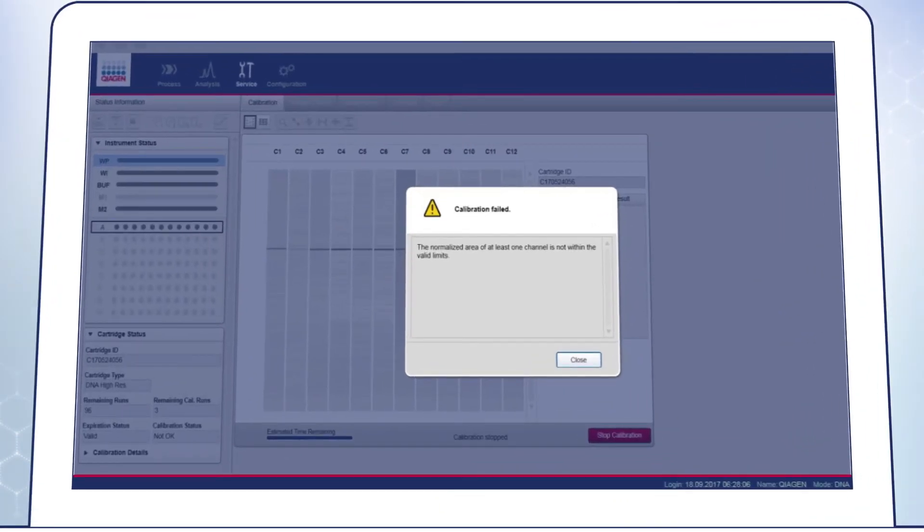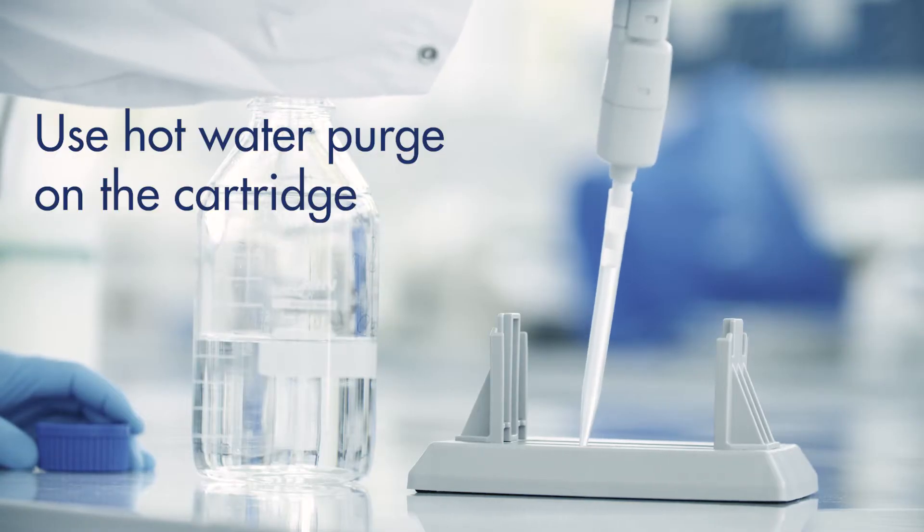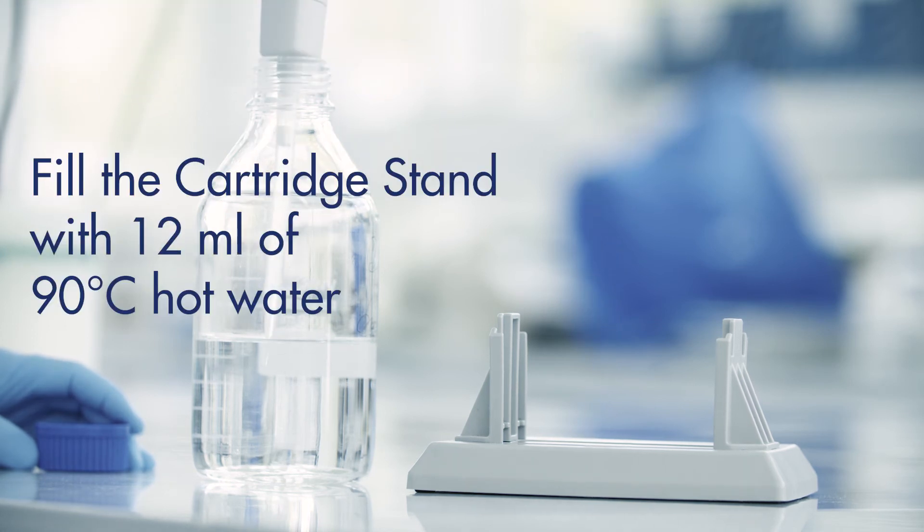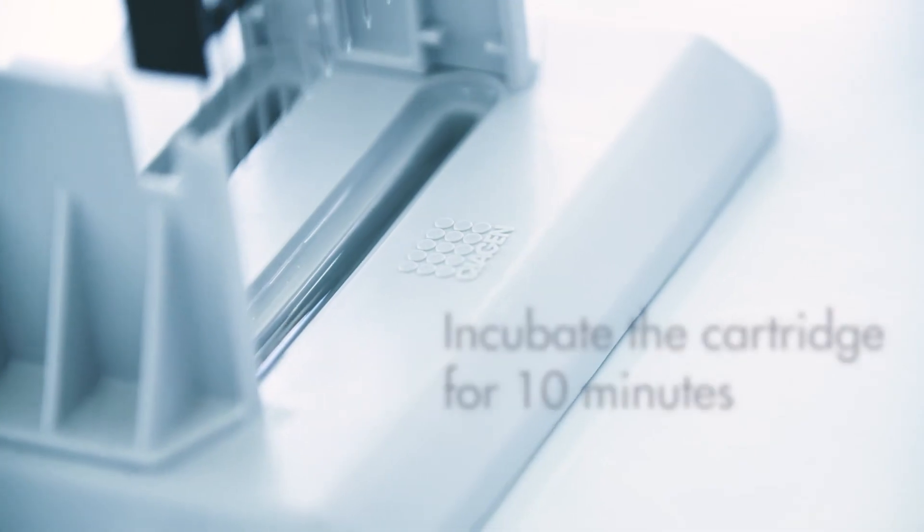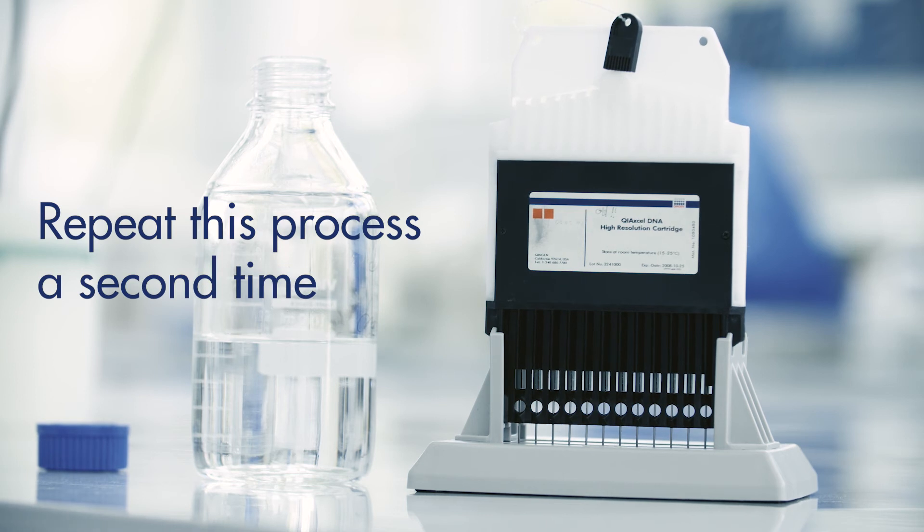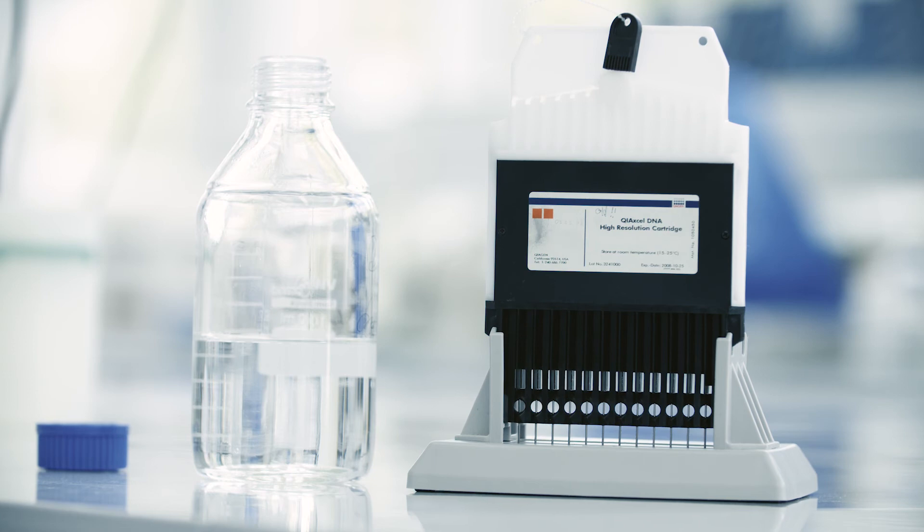If the calibration of the cartridge fails, or if one or more positions show high background, or in case you see ghost bands, this is usually due to dry gel which blocks the capillaries. In such cases, we recommend performing a hot water purge on the cartridge. To do so, first fill the cartridge stand with 12 milliliters of 90 degrees centigrade hot water and incubate the cartridge for 10 minutes. Repeat this process a second time after exchanging the hot water. This should soften the gel in the capillaries.